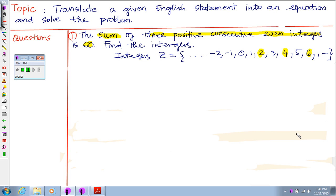So let's start with this example. The sum of three consecutive even integers is 60. Find the integers.